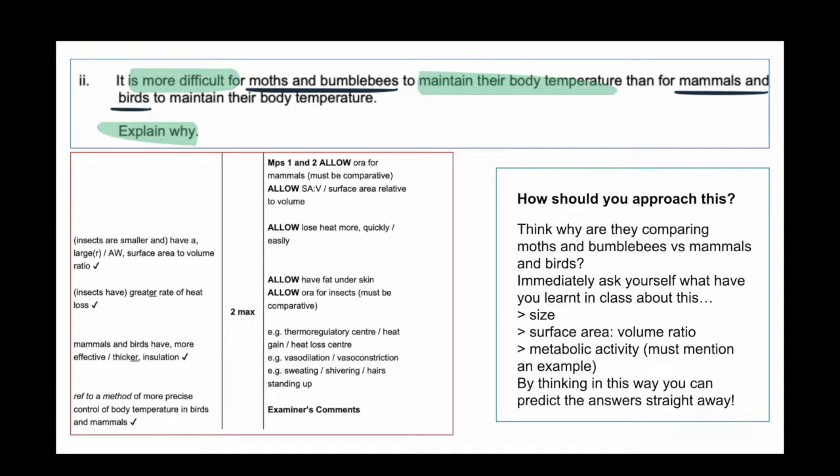Another given is that insects have a greater rate of heat loss. Well, yes, because in class you learn that if the species has a larger surface area to volume ratio, they lose more heat as there's more area to lose it from. That's already two marks, but we can think of other points because we like to go above and beyond.